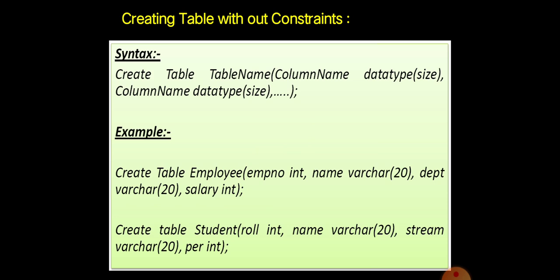Look at another example: CREATE TABLE student. The columns are role INT — where role indicates the roll number of a particular student — name of a student, stream (that is the subject stream such as biology, computer science, or commerce), and per, that is percentage. Here we can enter records with roll number, name, stream and the percentage of many students. I think you are all clear about how to create a table without constraints — here I didn't mention any constraints. In the lab, you normally create a table without constraints.